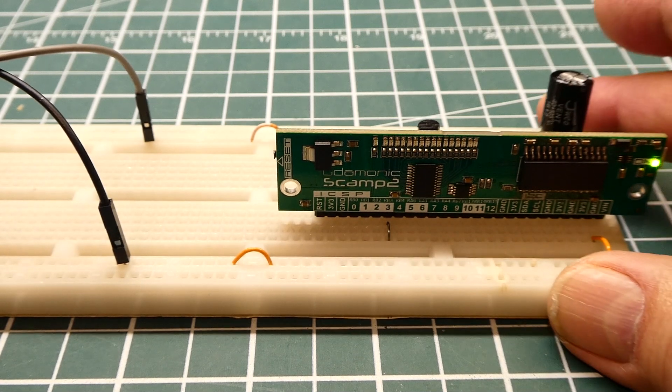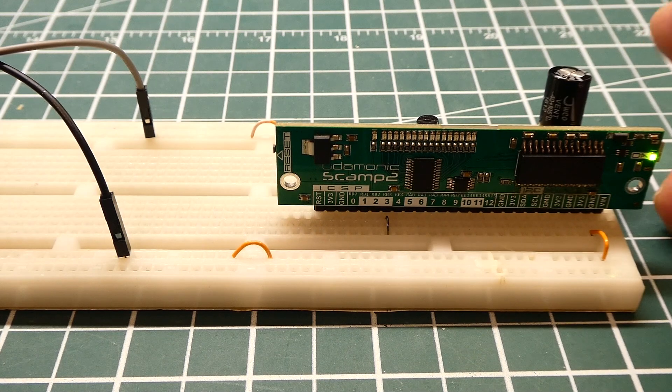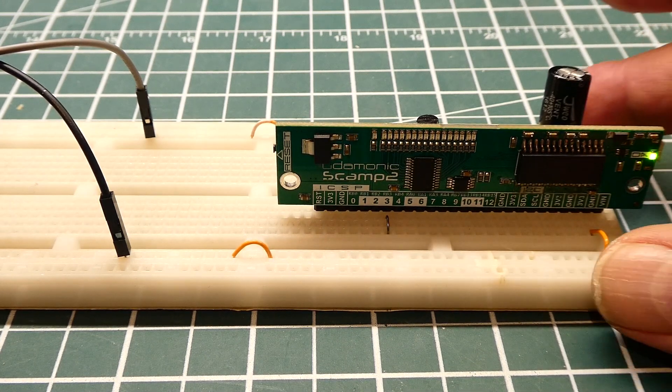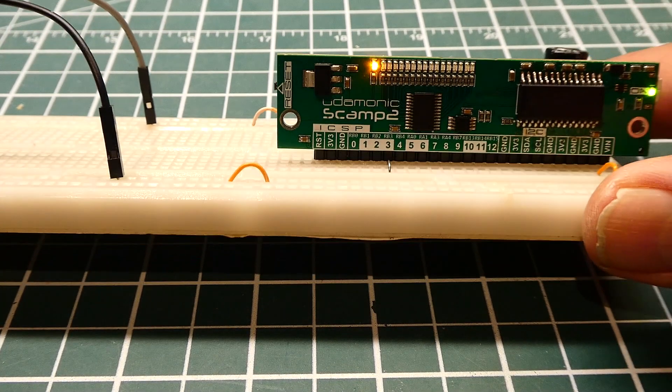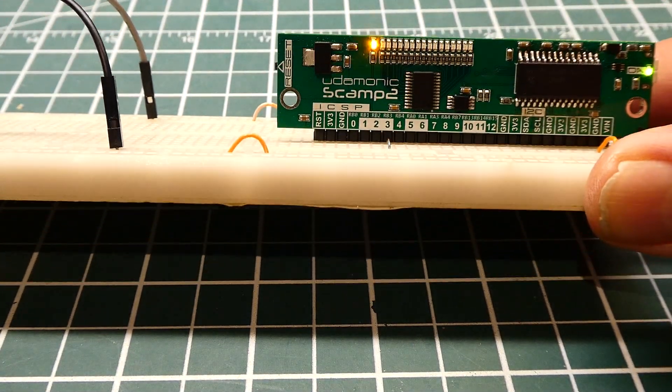Now all these sensors we could set up a threshold so when a threshold is exceeded we're going to get an alarm. So we could have a tilt sensor and if it tilts more than 45 degrees we could have an alarm.